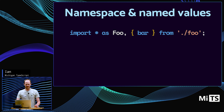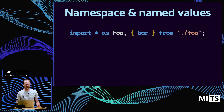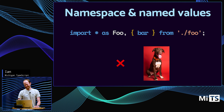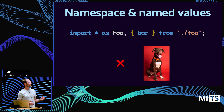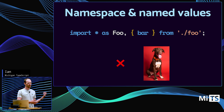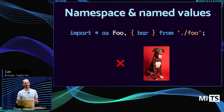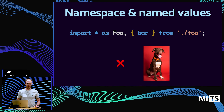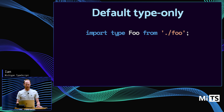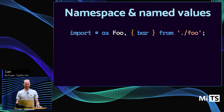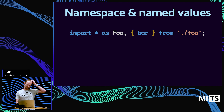A namespace combined with a named value in the same import statement? No, you can't do that. My theory is it's a little ambiguous — would bar also be in foo, or would you expect it to be excluded from foo? You can do them on separate lines, just not in one statement. And you can't do them in the opposite order either.